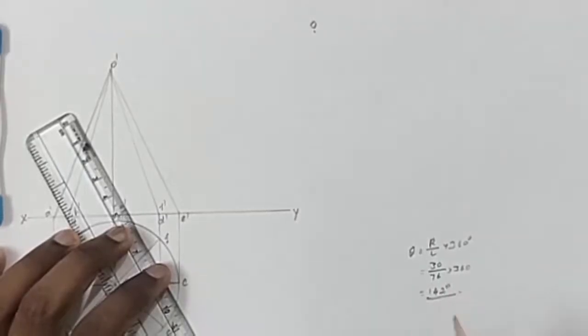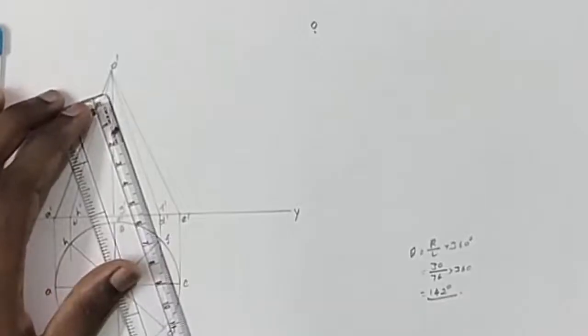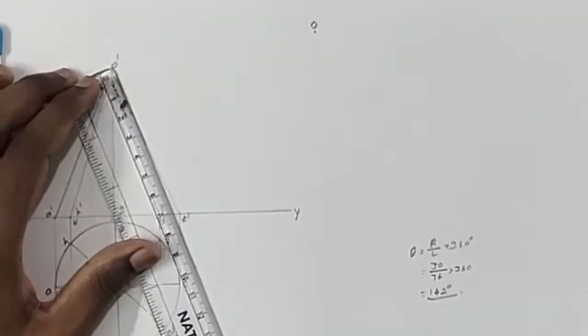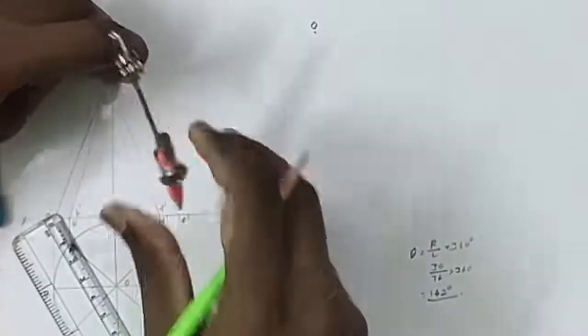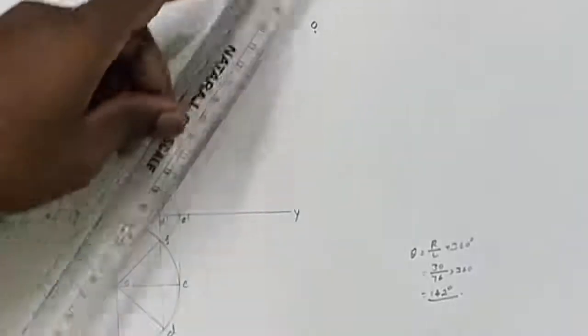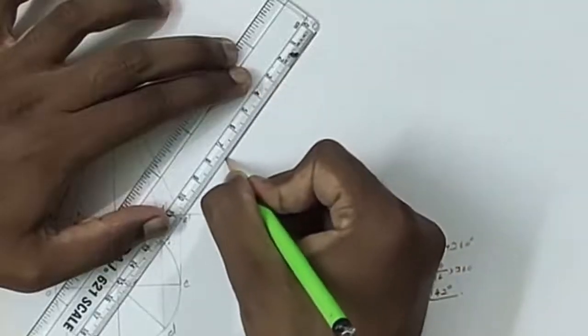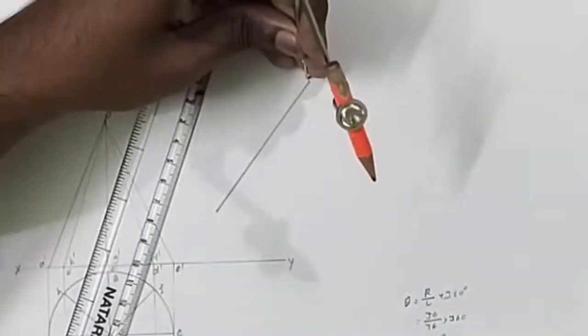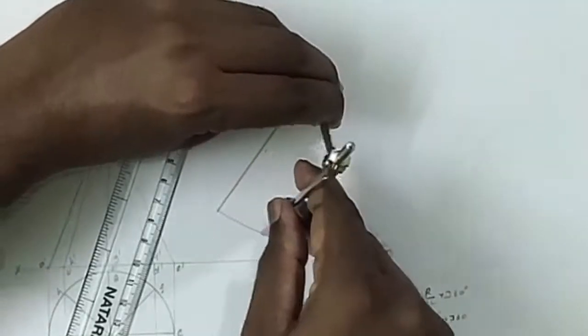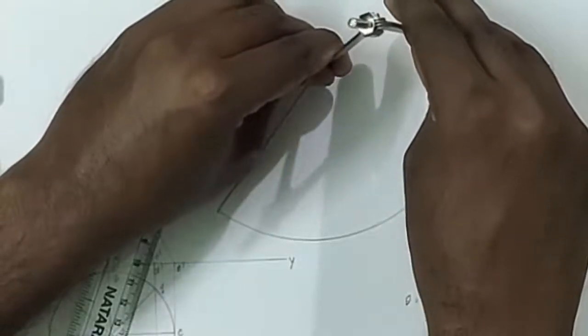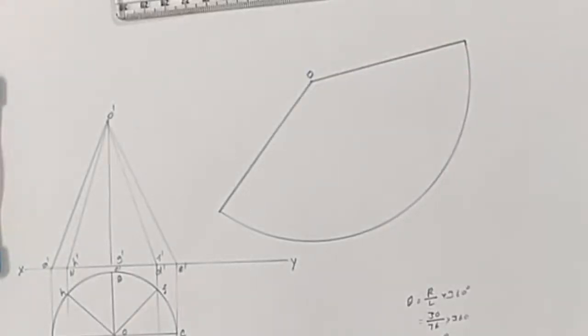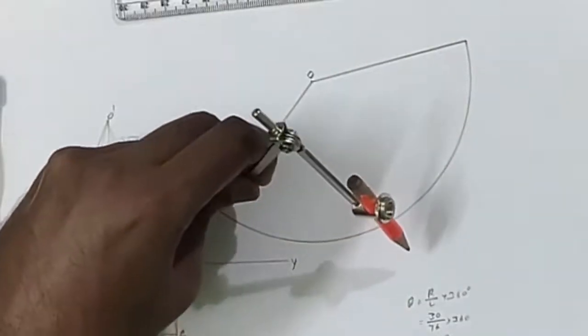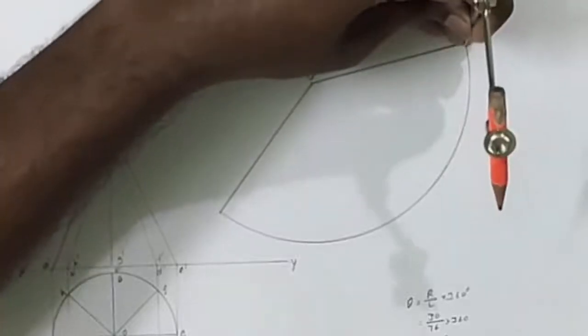Measure the slant length, that is 76mm, and draw an arc at an angle of 142 degrees using your protractor. Now we have to divide this sector into 8 equal parts. For that, take a compass and take more than half of this size and cut an arc here, and from the other end cut an arc meeting the first arc.